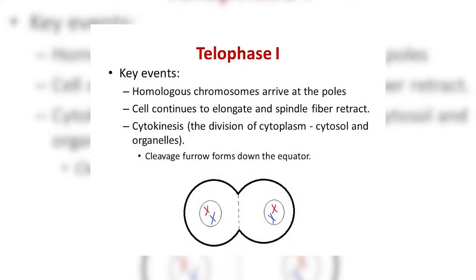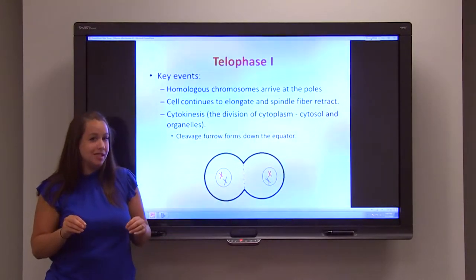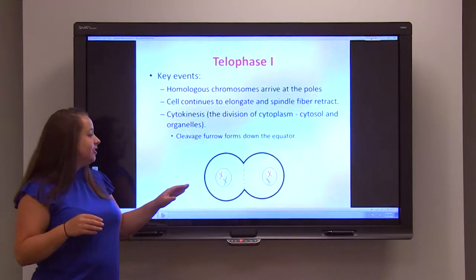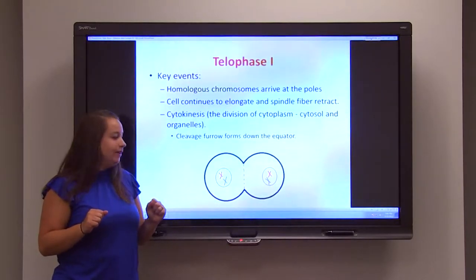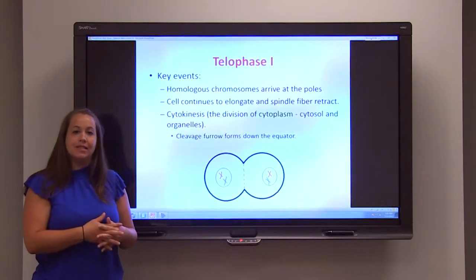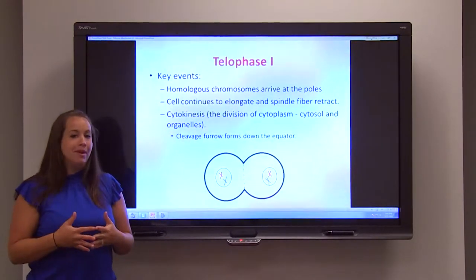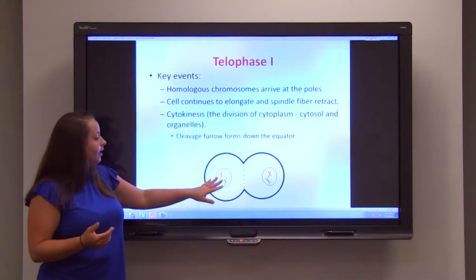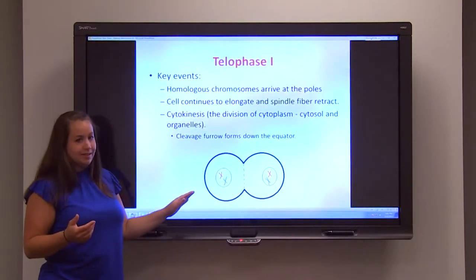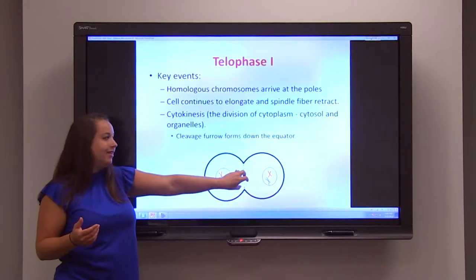Then you have telophase I. During telophase I, the homologous chromosomes arrive at either pole. In some species, this involves reforming the nuclear envelope, dividing into two separate cells, unwinding chromosomes back into chromatin, and pausing before entering the second phase of meiosis. In most species, however, once the chromosomes reach their destination, you move directly into cytokinesis without reformation.